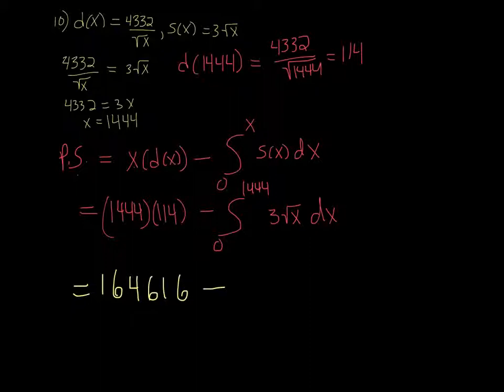And then if I do math 9 of 3 root x comma x comma 0 comma 1444, calculator's being a little bit slow. So it's 109,744. And I can subtract those and get 54,872.